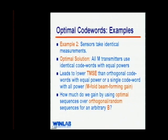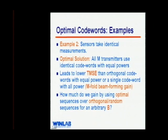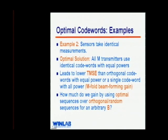Another example is when measurements are identical — completely correlated. In that case, the optimal solution is that all M transmitters use the same exact codeword with equal powers. This is useful because in sensor network applications, we have very low data rate, low power links with huge bandwidth. Normally we make all links orthogonal, but this result shows that may not be optimal. The reason using the same codeword is better is that you get an M-fold beamforming gain at the receiver.